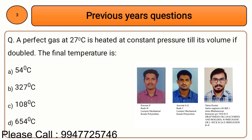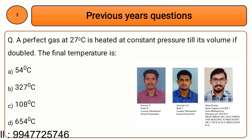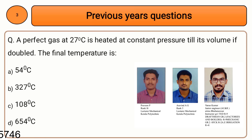Next question: a perfect gas at 27 degrees Celsius is heated at constant pressure until its volume is doubled. The final temperature is — option A: 54°C, option B: 327°C, option C: 108°C, option D: 654°C. Given: initial temperature 27°C, constant pressure, volume doubled (V2 = 2·V1).